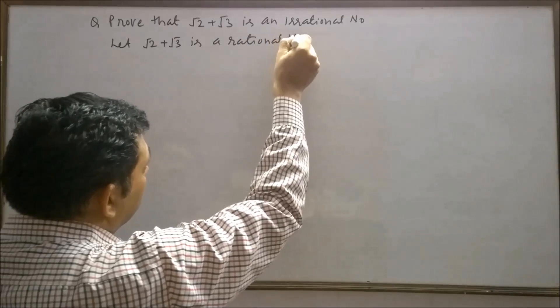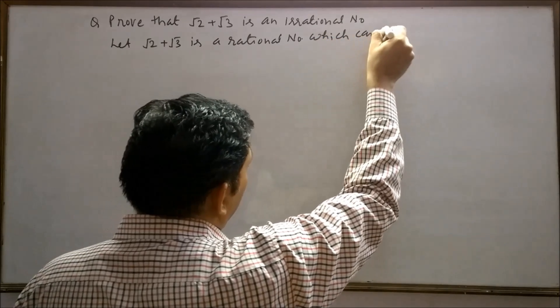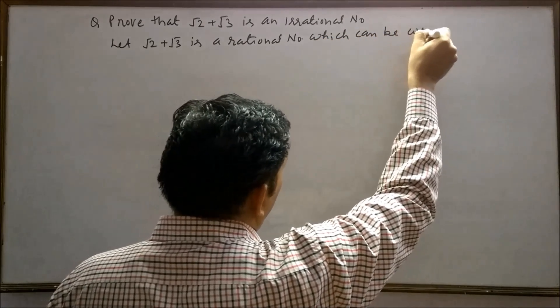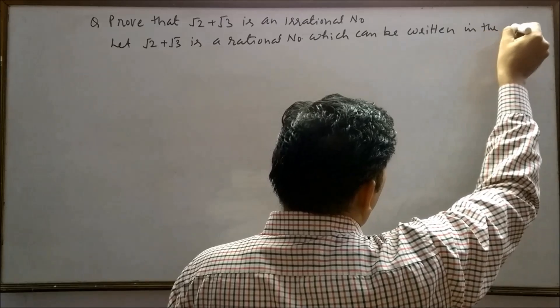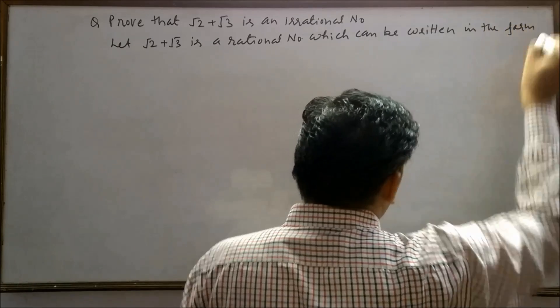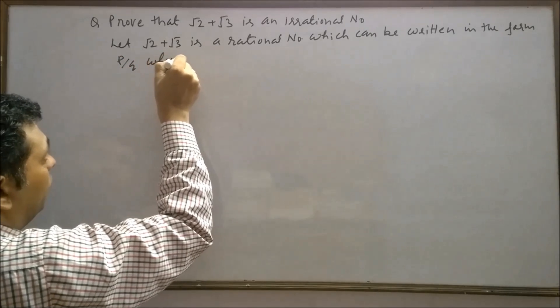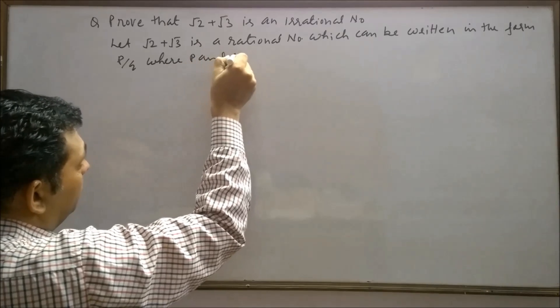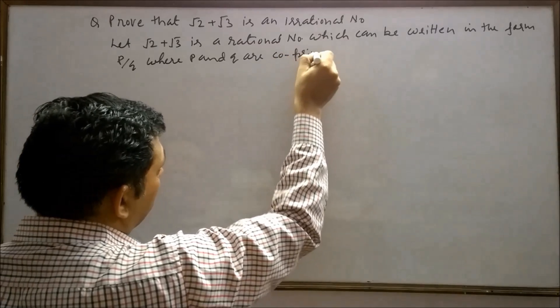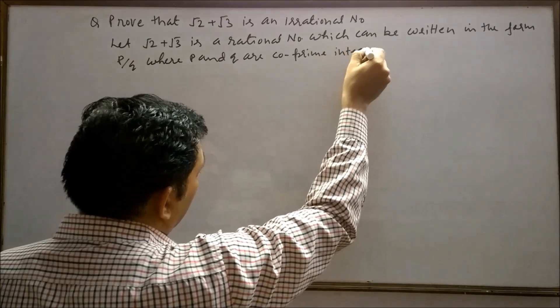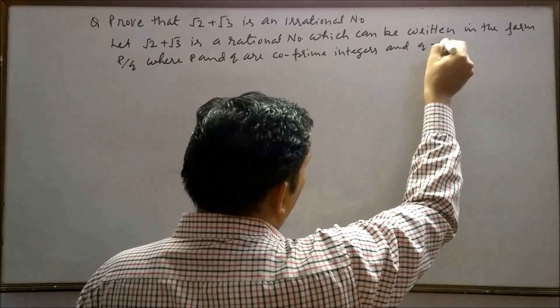A rational number can be written in the form p upon q, where p and q are co-prime integers and q is not equal to 0.